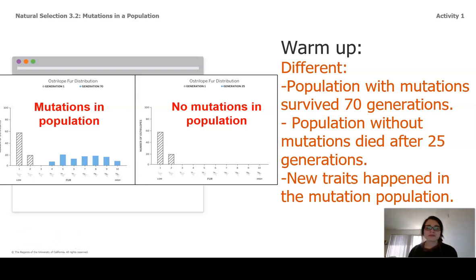Things that are different. One could mutate while the other wasn't able to. The population with mutations survived 70 generations. The population without mutations died after 25 generations, and new traits appeared in the mutation population.